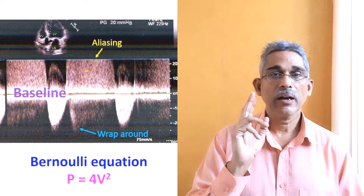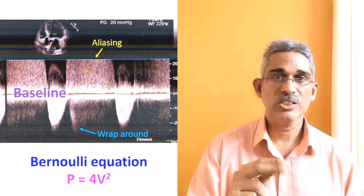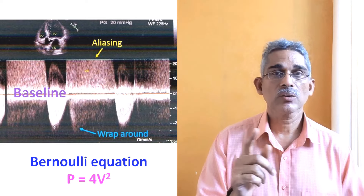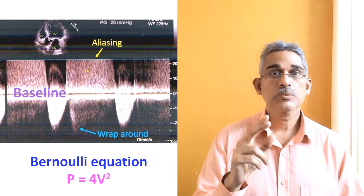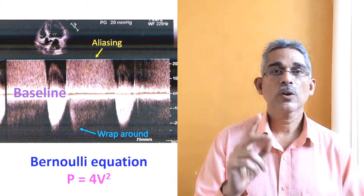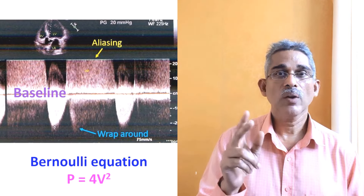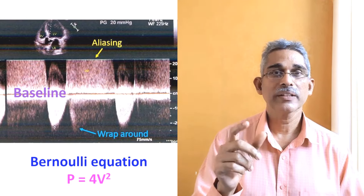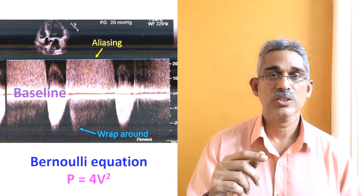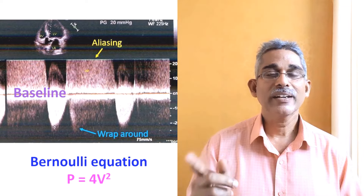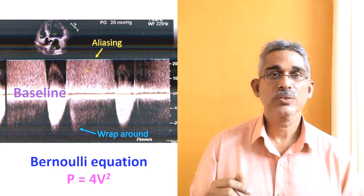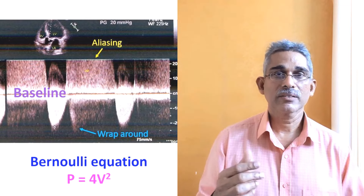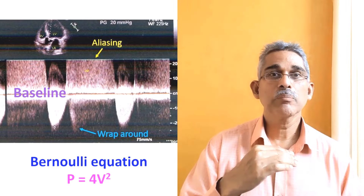With continuous wave Doppler you can calculate the velocity of a high-velocity jet, and from the velocity you can calculate the gradient using the Bernoulli equation: 4v². The square of the velocity multiplied by 4 gives you the gradient. This allows you to know the gradient between the left ventricle and aorta in aortic stenosis, or between the left atrium and left ventricle in mitral stenosis, and so on.